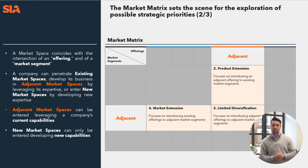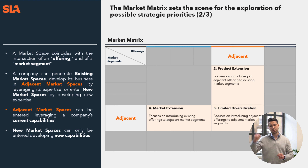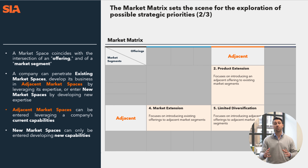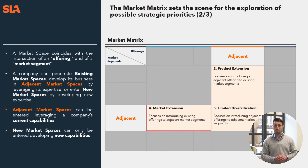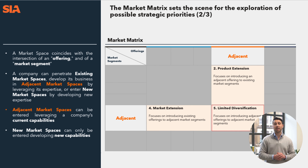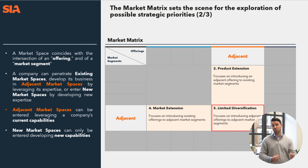Now let's take a look at adjacencies. In adjacencies, we look at areas — either products and services or market segments — that are close to what we do today with some adaptation. There's what's known as product extension, where we focus on introducing an adjacent offering to existing market segments. Then there's market extension, where we focus on introducing existing offerings into adjacent market segments. Finally, we have limited diversification, where we may introduce adjacent offerings into adjacent market segments.